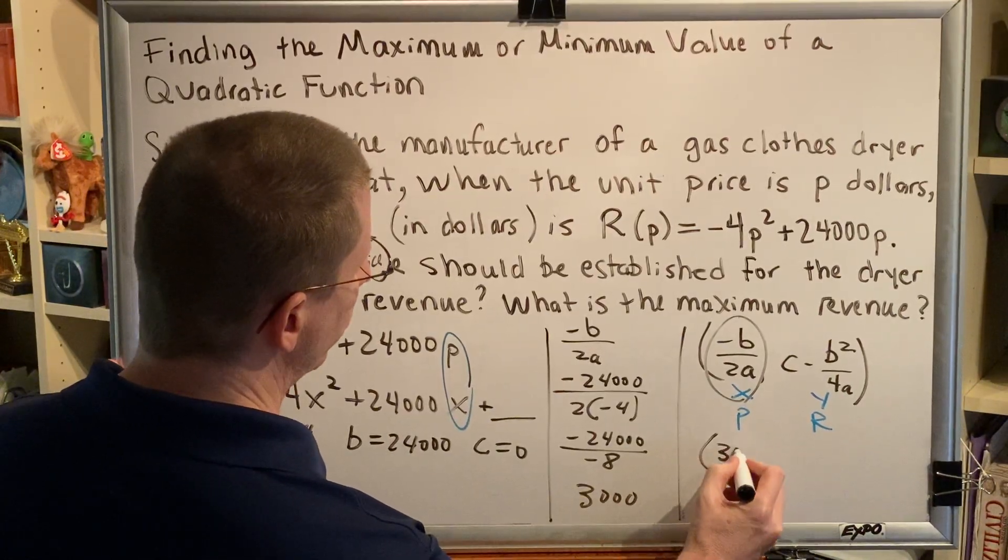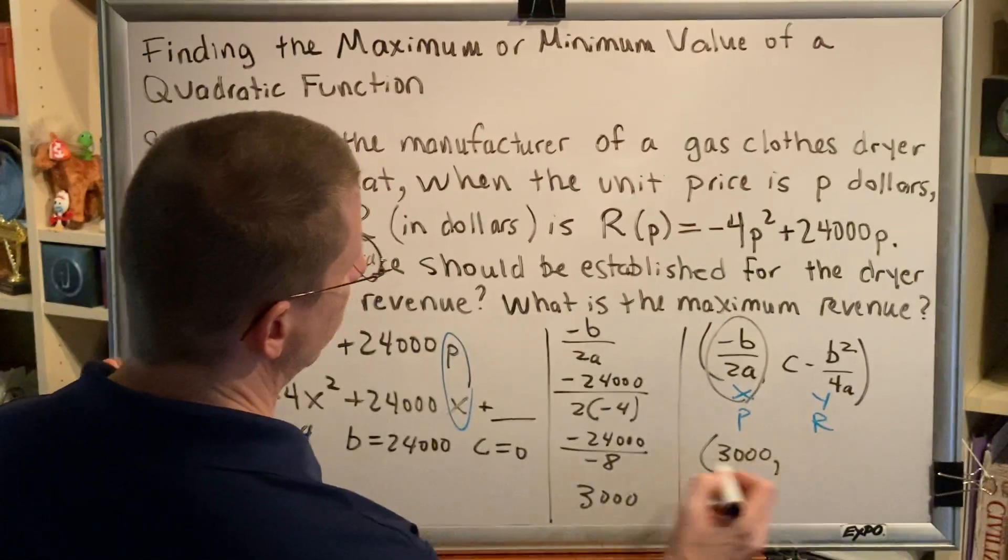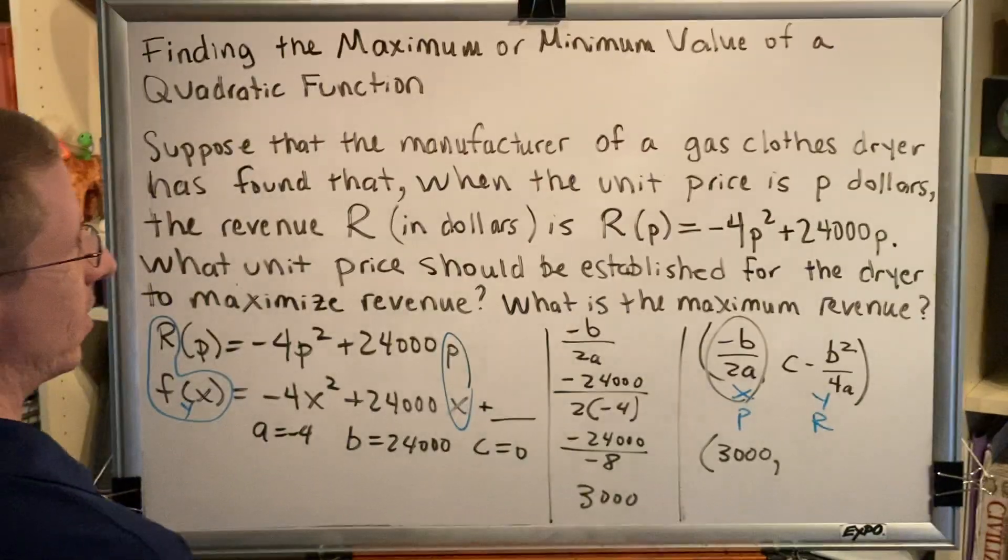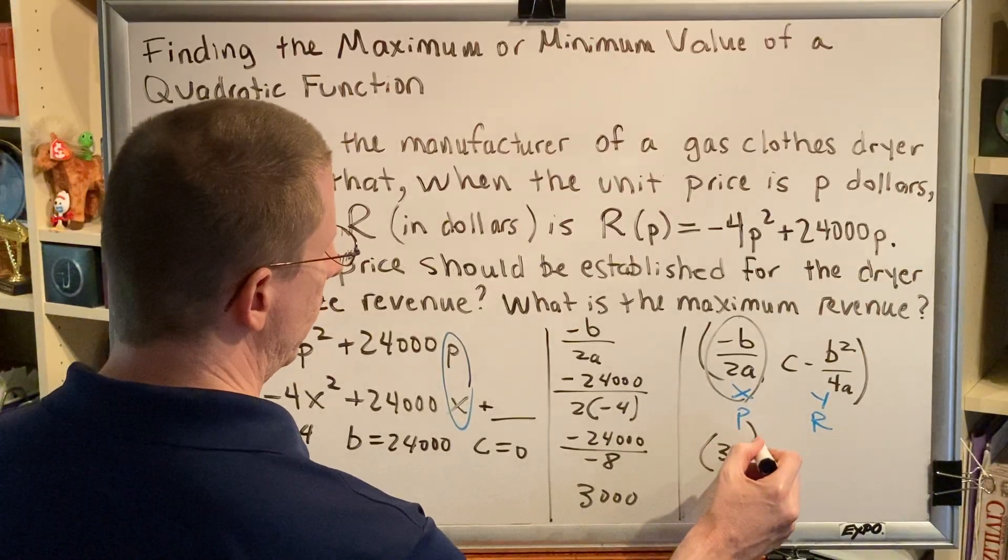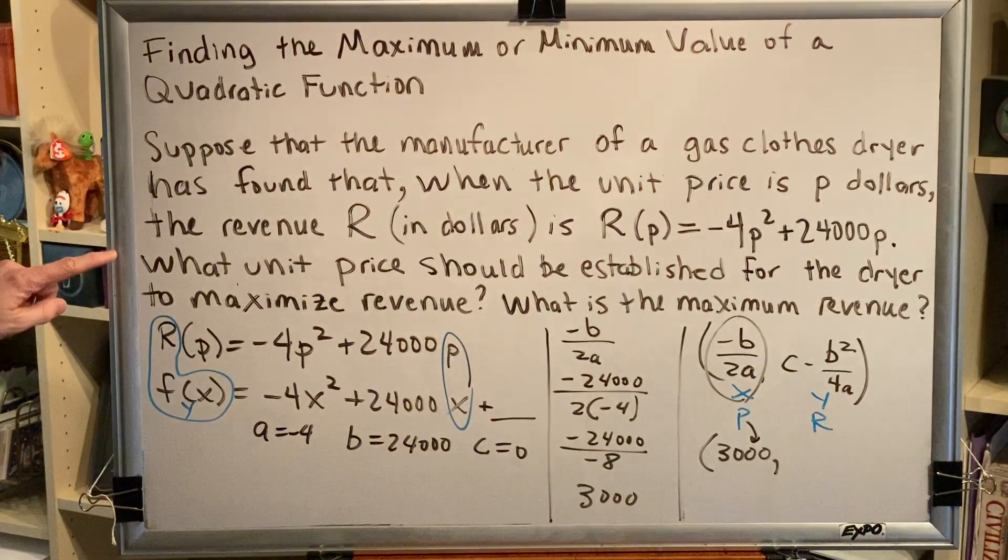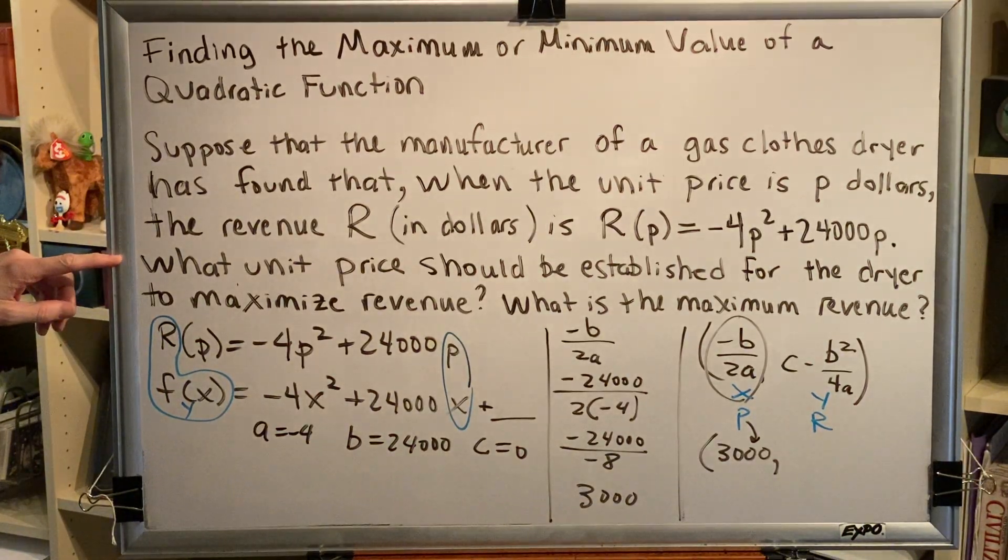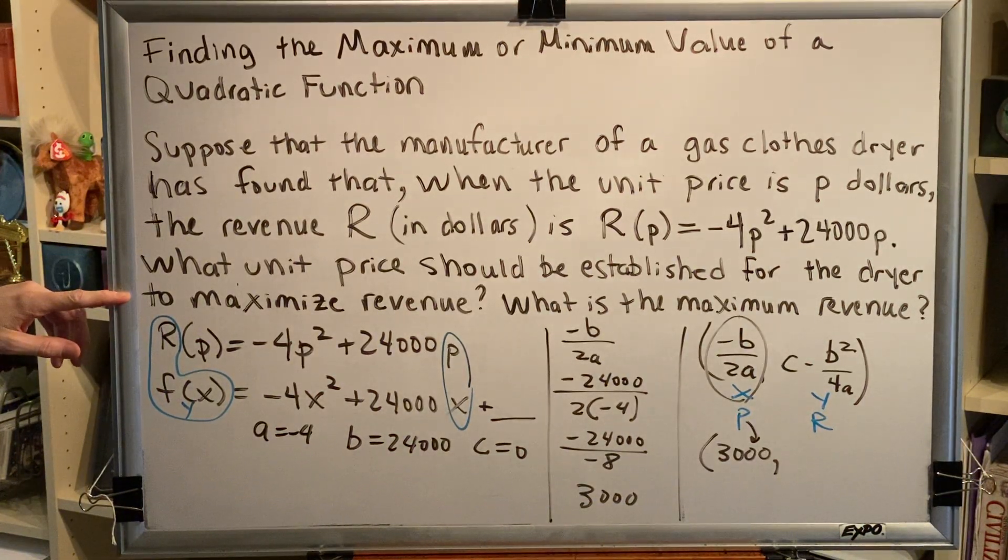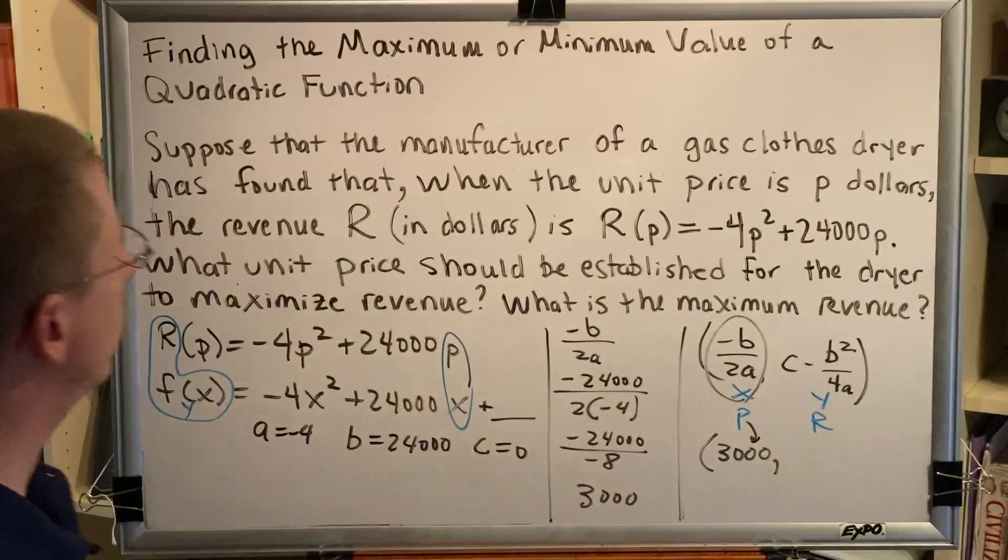So the x coordinate of our vertex is 3,000. That means that the price p is 3,000. And that answers the first question. What unit price should be established for the dryer to maximize revenue? Three thousand dollars.